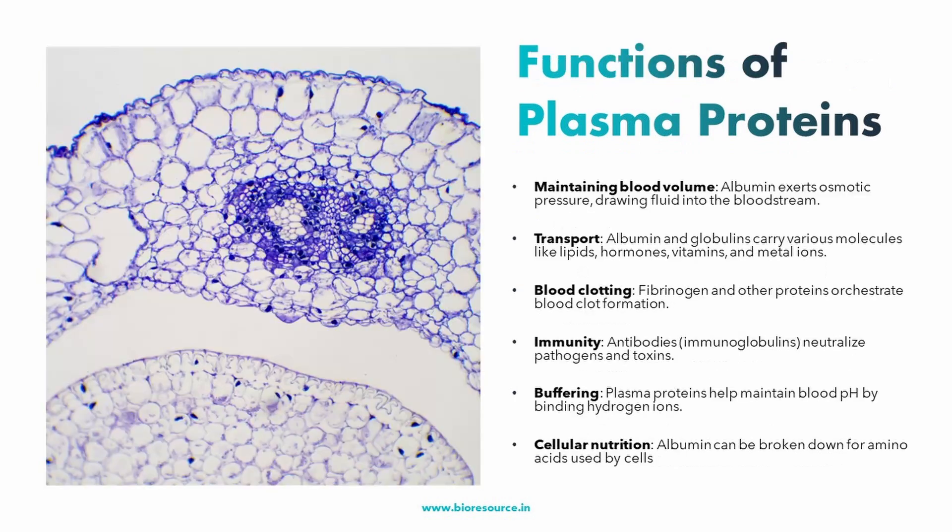Coming to the functions of plasma proteins — plasma proteins are the workhorses of blood plasma, constantly performing a variety of tasks to maintain our health. One key function is maintaining blood volume. Imagine plasma proteins like tiny sponges — albumin, the most abundant protein, acts like a big sponge that attracts and holds water molecules. This creates a pulling force called oncotic pressure, drawing fluid from tissues into the bloodstream, ensuring sufficient blood volume for proper circulation and delivery of oxygen and nutrients to organs.